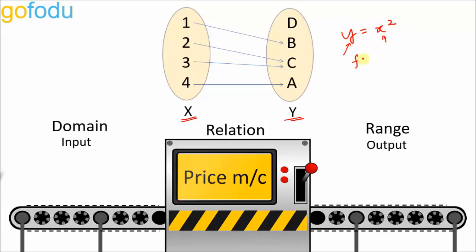You can put any value of x, but y's value depends on what value we put for x, so y is the dependent variable. This relation is called a function, commonly written as f(x) = x². An important thing to keep in mind is that for a function, for one value of x there should be one and only one value of y — then only this relation will qualify as a function.